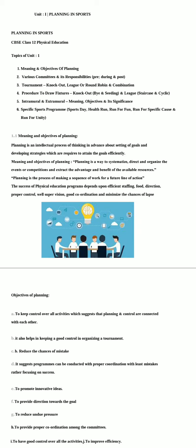We are going to start Chapter number 1: Planning in Sports. We have 6 key points in this chapter. First: Meaning and Objective of Planning. Second: Various Committees and their Responsibilities. Third: Tournament. Fourth: How to draw a fixture. Fifth: Intramural and Extramural. And sixth: Specific Sports Programs.